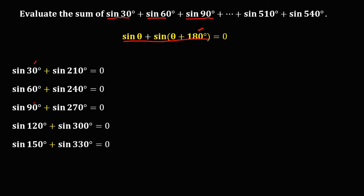So 150° + 30° = 180°. Sin 180° + sin 360° equals 0. Since we already have 210°, 240°, 270°, 300°, 330°, and 360°, the remaining angles start from 360° + 30° onward.